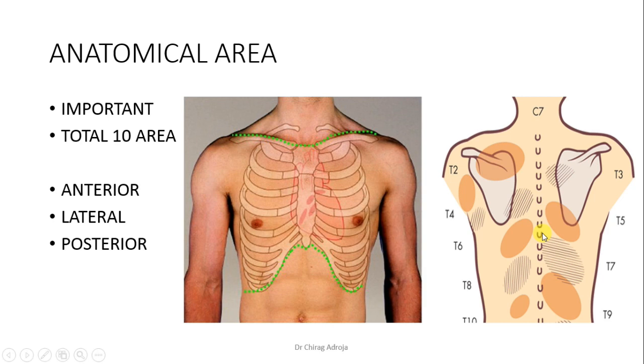Total 10 areas. When you have any abnormal finding, you describe it in which anatomical area you have such an abnormality.